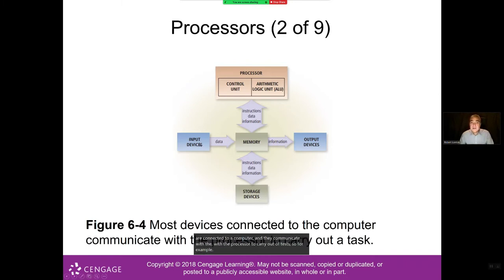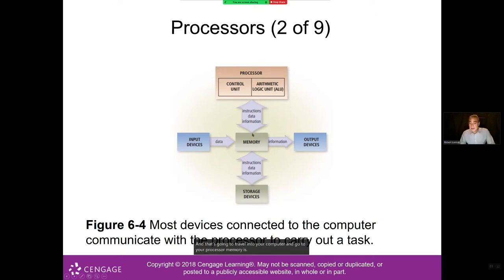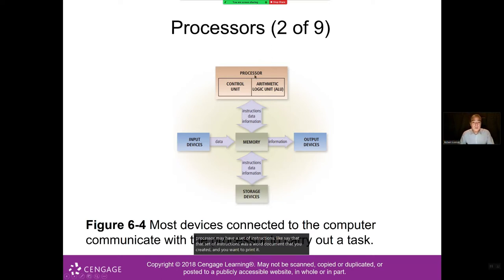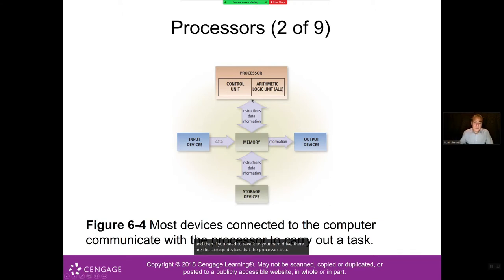For example, an input device like a mouse sends data to the processor. Memory is accessed back and forth from the processor. Output devices like a printer receive instructions — say, a Word document you want to print. The processor sends it to the printer, and if you need to save it, the processor communicates with storage devices and saves the file to your C drive.